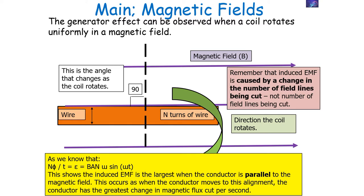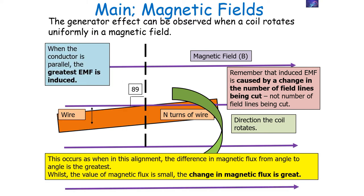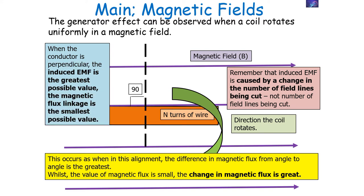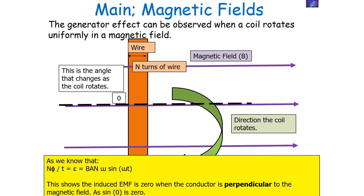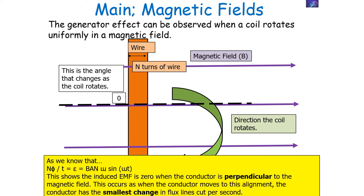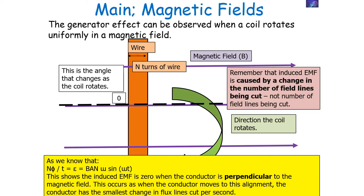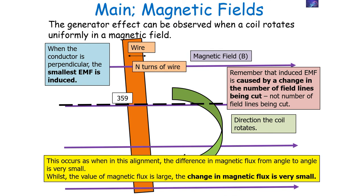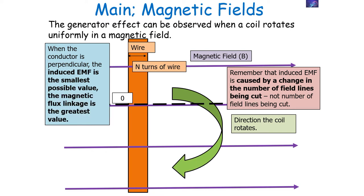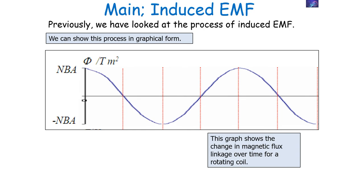The induced EMF is largest when the conductor is parallel to the magnetic field, as that is when the conductor has the greatest change in magnetic flux cut per second. Remember: EMF is caused by a change in the number of field lines being cut, not the number being cut itself. Whilst the magnetic flux is small, the change in magnetic flux is great. When the conductor is perpendicular, the induced EMF is zero — sin omega t becomes zero. This is because there is the smallest change in flux per second: the number of field lines cut is large, but the change per second is very small.